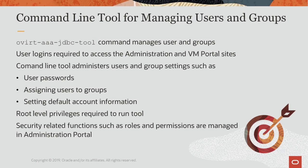Before local users can use their login credentials to access the administration and VM portal sites, new users and groups are added to the system using the ovirt-aaa-jdbc-tool command utility. This utility is used to manage user and group accounts on the internal domain, also called the local domain. The command line tool is used to add and remove users and groups, reset users' passwords, and change default account settings. To run the command line tool, root-level privileges are required. Permission settings and functional roles can be assigned through the administration portal after the new user or group is created and imported into the system.